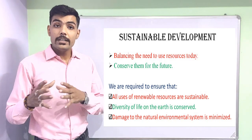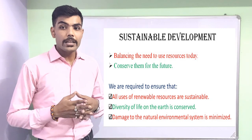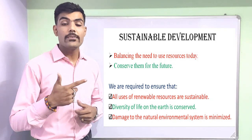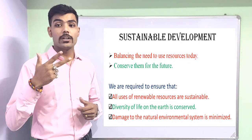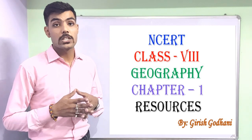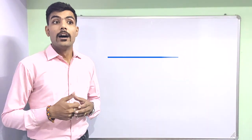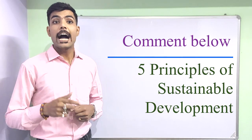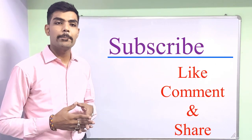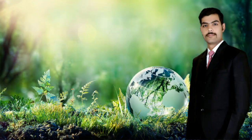Now, how can we do all those things? The future of our planet is in our hands. It is our duty to ensure: first, that all uses of renewable resources are sustainable; second, that the diversity of life on Earth is conserved; and third, that the damage to natural environmental systems is minimized. This is how we finish class 8 geography chapter 1 on resources. Please comment the five principles of sustainable development — I will personally check and like your comments. If you found this video instructive and fruitful, do subscribe, like, share, and press the bell icon. Thank you.